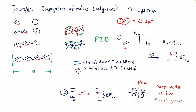For example, in the case of one double bond, you have one bonding pi orbital and one antibonding pi orbital, and two pi electrons filling the ground state — energy level n=1. If there's excitation with the proper amount of energy, there's a transition from n=1 to n=2, and that energy difference is what is analyzed in UV spectroscopy.